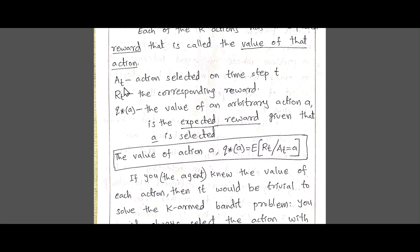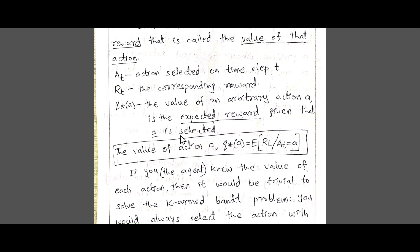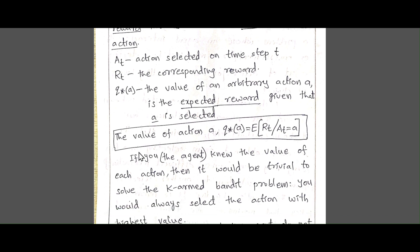Here, A_t defines the action selected at a given time step T. R_t means the corresponding reward earned over a period of time. Then Q*(a) means the value of an arbitrary action — the expected reward given that action A is selected. Q*(a) equals E[R | A_t = a].